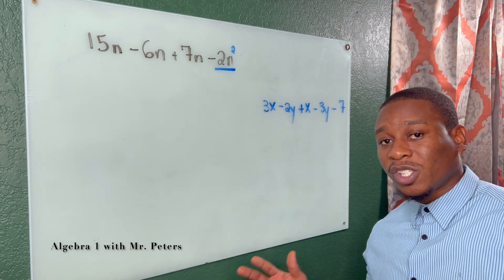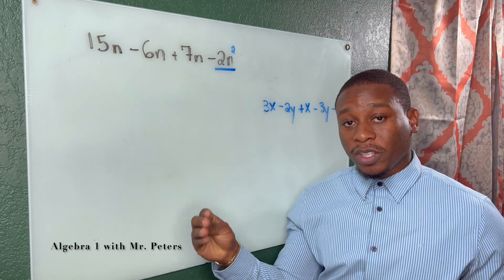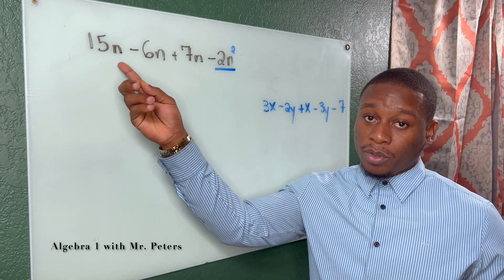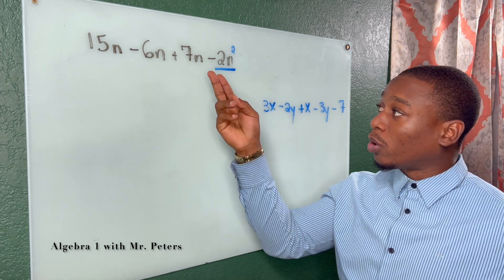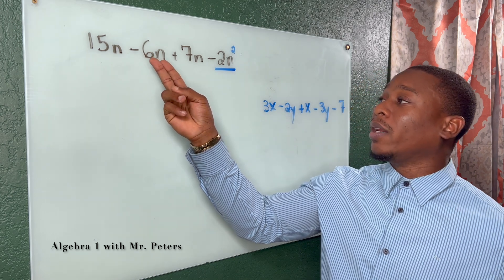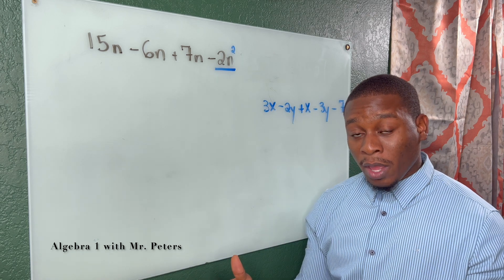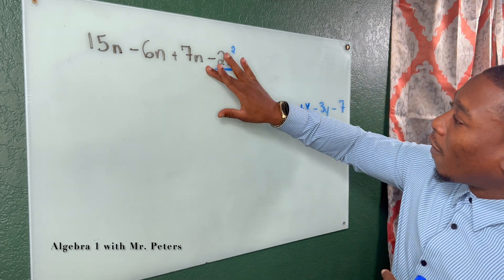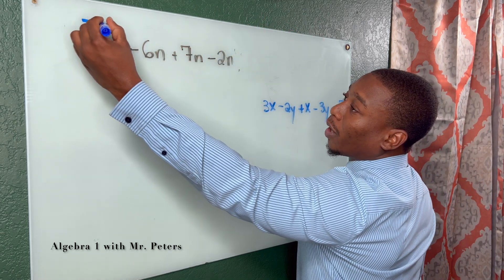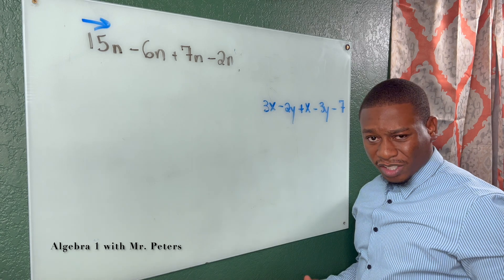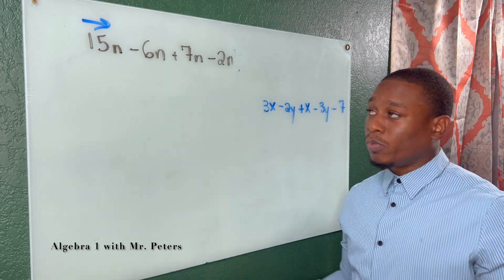An error I see students make — let's say the last term was n squared. They would think all four terms are like terms because they have the same variable. But if the last term is n squared, that is not a like term to the other three terms: 15n, negative 6n, and 7n. For them to be like terms, they have to have the same variable and the same exact exponent.